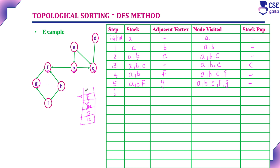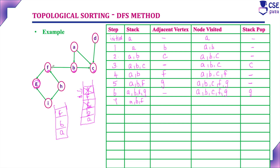The top element is now G. Adjacent vertices to G: we cannot reach any other vertices from G, so G has reached a dead end. No adjacent vertices. Nodes visited are A, B, C, F, and G. We pop G from the stack. Stack content after popping G is A, B, and F. The top element is now F. There is no adjacent vertex to F, so we pop F from the stack since it has reached a dead end.